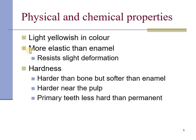Dentine is yellowish in nature and as the dentine increases with age, the tooth tends to become yellowish with age. It is more elastic than enamel and resists slight deformation. Enamel is very brittle. Without the support of the dentine, it would fracture very easily. Dentine is harder than bone but softer than enamel, and it tends to be harder near the pulp than at the dentino-enamel junction.